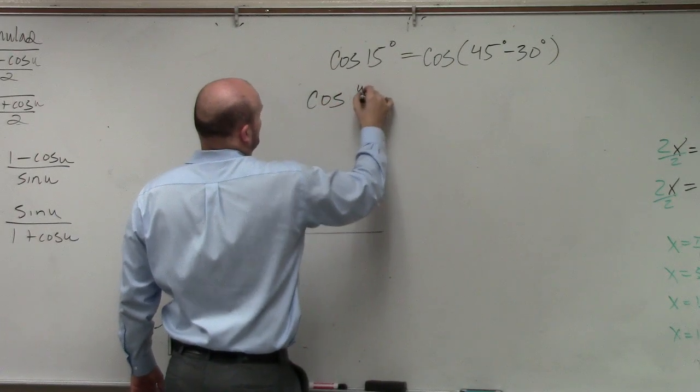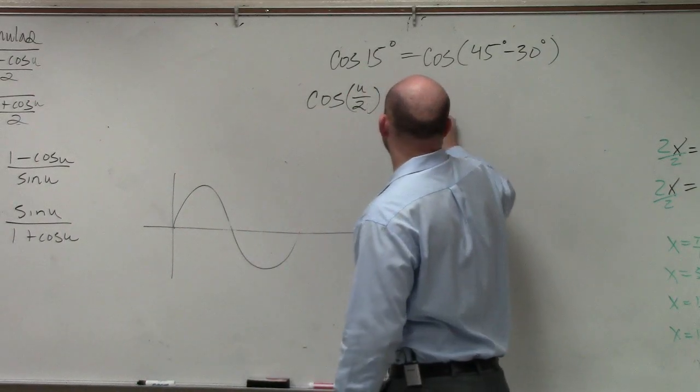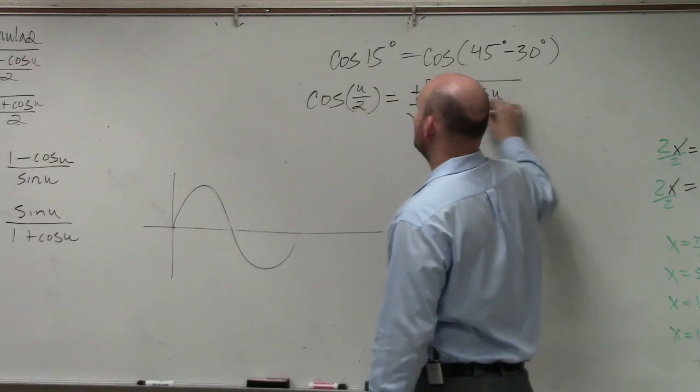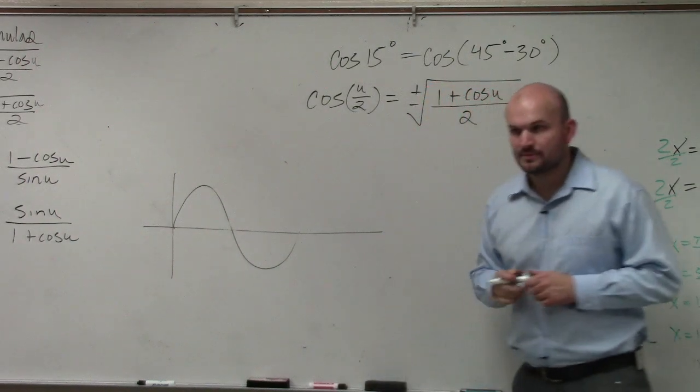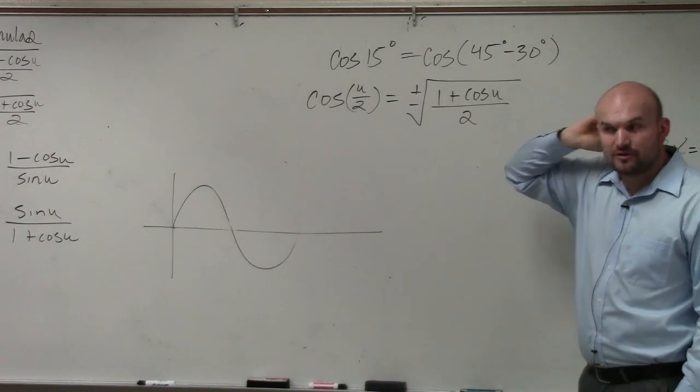So the double angle formula of cosine is equal to plus or minus the square root of 1 plus cosine of u all over 2. I'm sorry, I'm using the half angle formula.